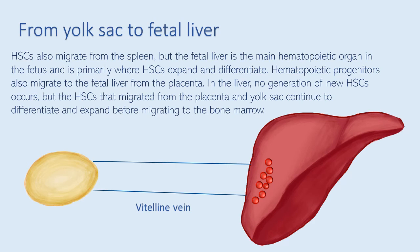In the liver, no generation of new hematopoietic stem cells occurs, but the hematopoietic stem cells that migrated from the placenta and yolk sac continue to differentiate and expand before migrating to the bone marrow.